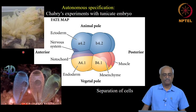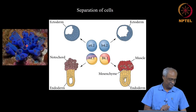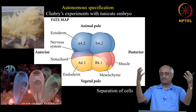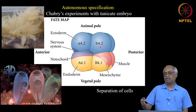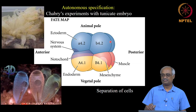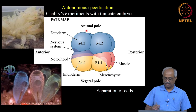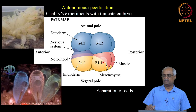Chabry did an interesting experiment with tunicates — filter-feeding organisms. Embryos are easy to separate into blastomeres and fate-mapping can be performed. At the 8-cell stage, for example, cell B4.2 gives rise to ectoderm, while another composite-color cell gives rise to muscle mesoderm, mesenchyme, and endoderm. When separated, each cell makes its respective part as expected for autonomous specification, forming the structures mapped in the fate map. If you put them all back together, you have a complete embryo.